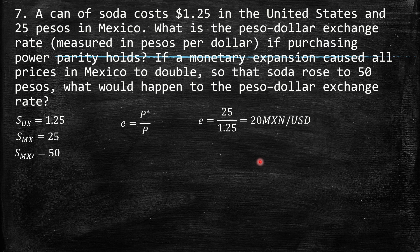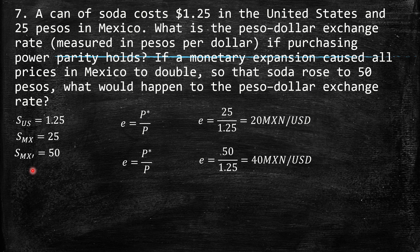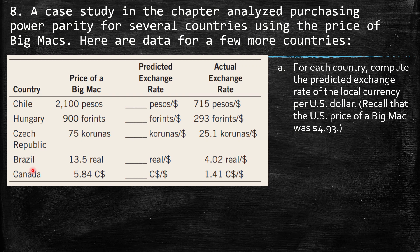If a monetary expansion causes all prices in Mexico to double so that soda rises to 50 pesos, what happens to the peso-dollar exchange rate? We compute the same formula: 50 over 1.25, which gives us 40 Mexican pesos per dollar.